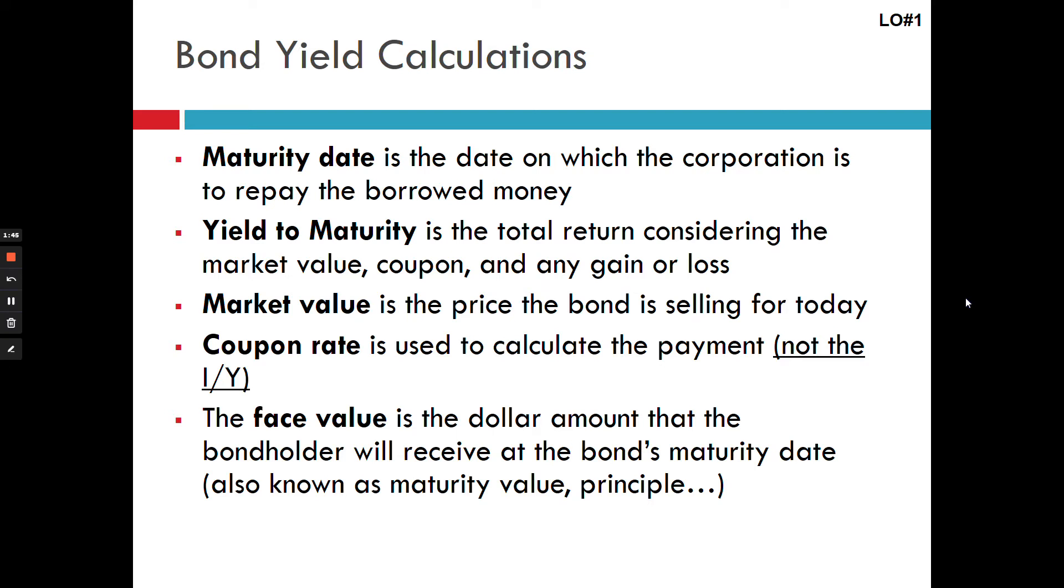The coupon rate is the one that could be a little bit confusing because it is expressed as a percentage, but all you use it for is to calculate the payment. It's not your IY. It's never going to be your IY unless by coincidence they're both the same number. You're never going to use your coupon rate as your IY. Your IY is always the yield to maturity.